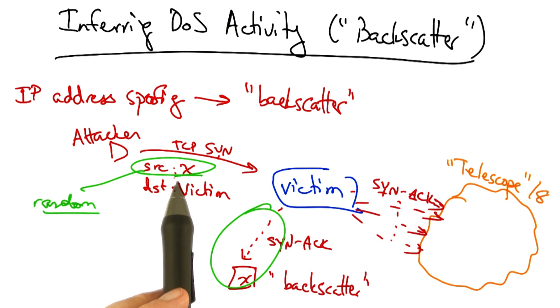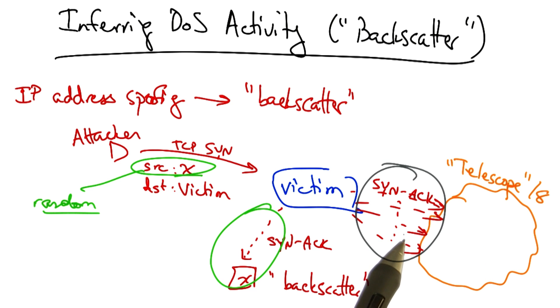If we assume that these source IP addresses are picked uniformly at random, then the amount of traffic that we see as backscatter represents exactly a fraction that's proportional to the size of the overall attack.